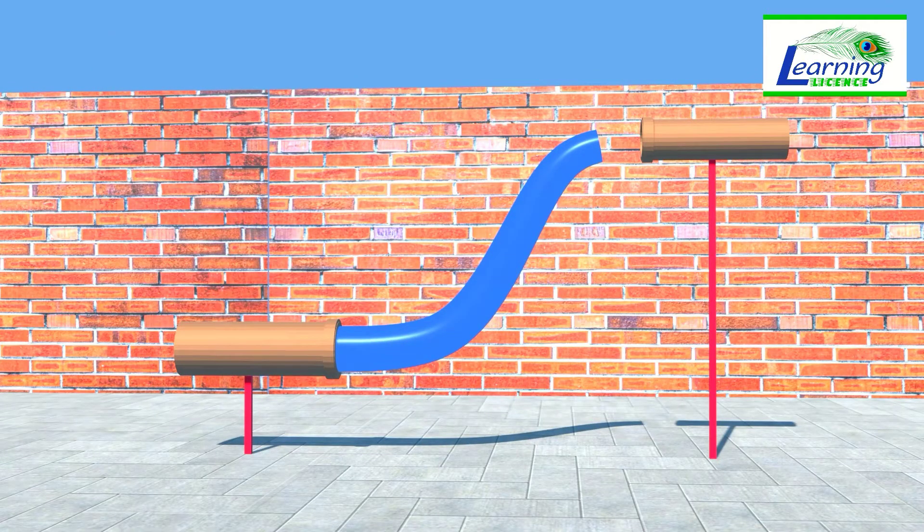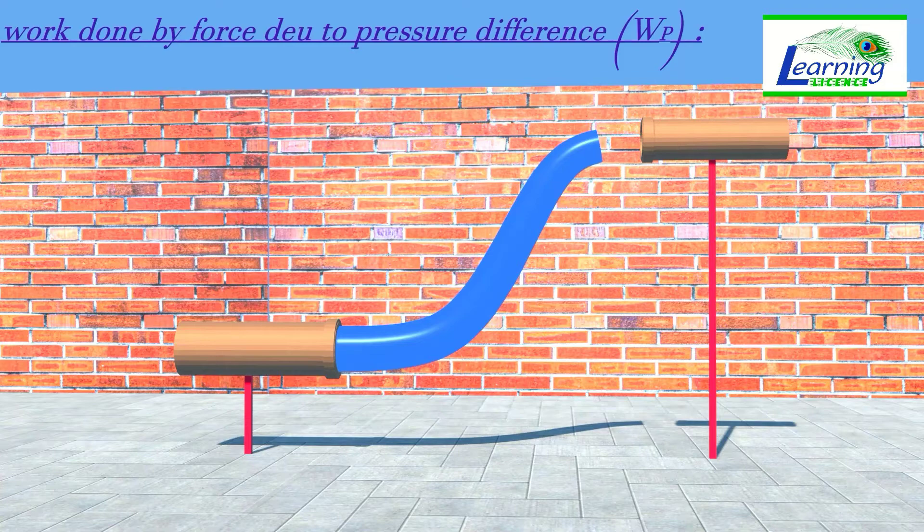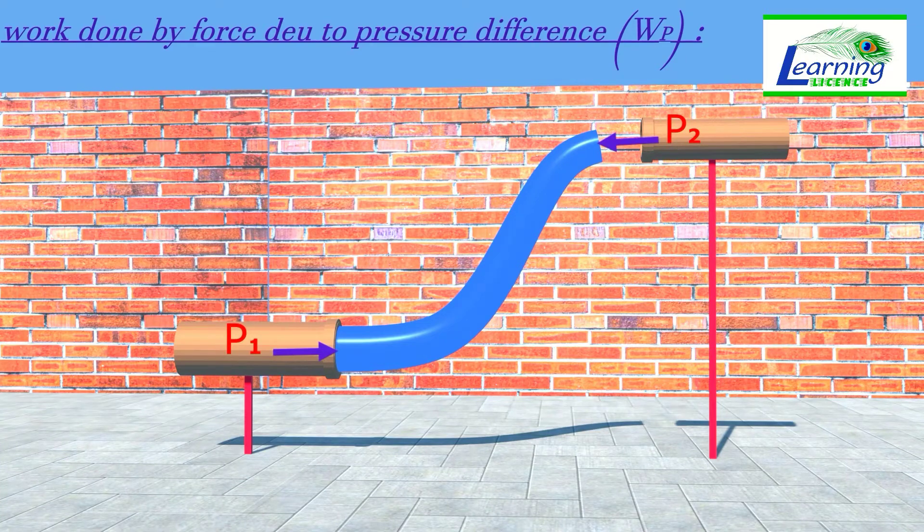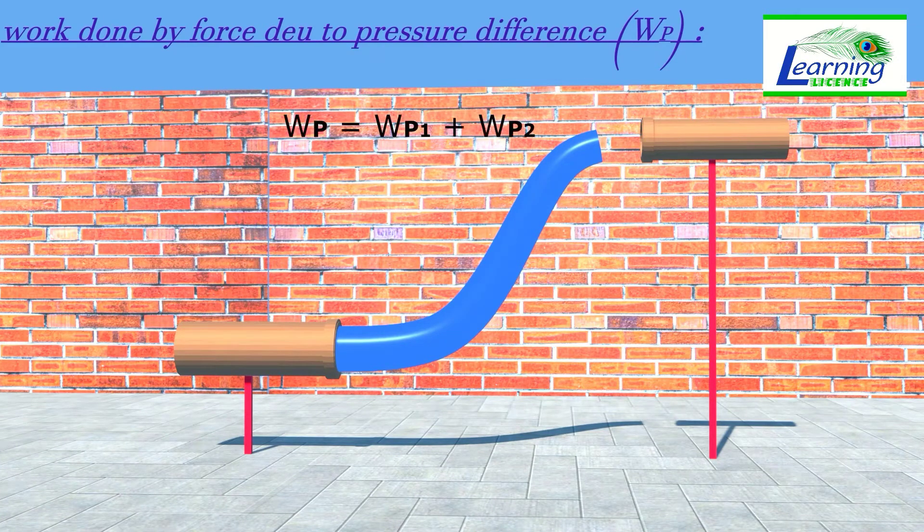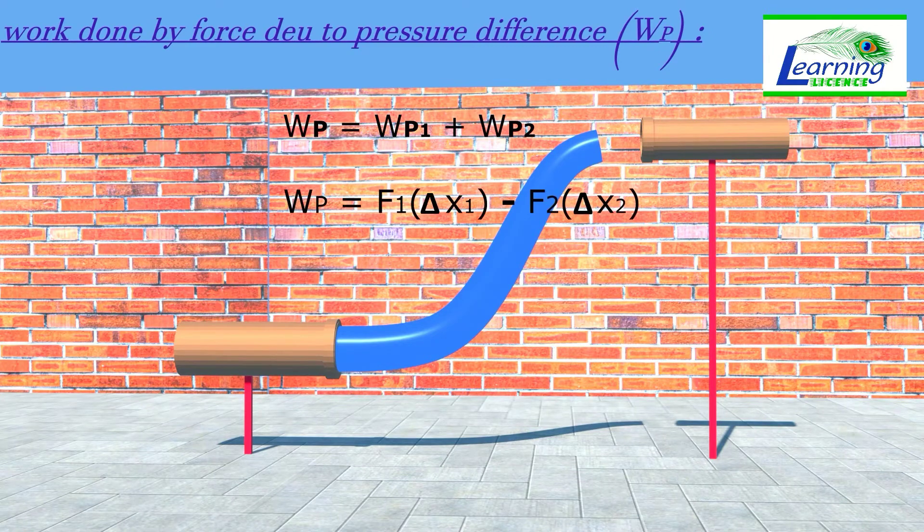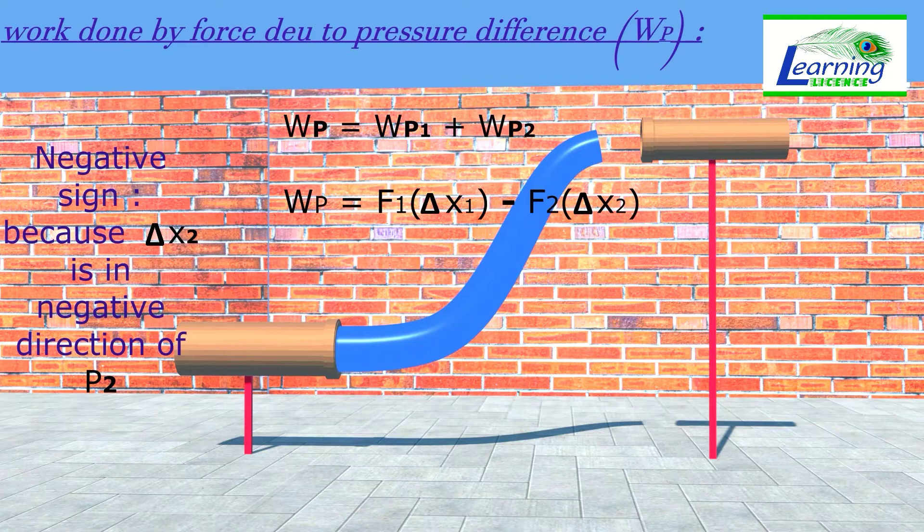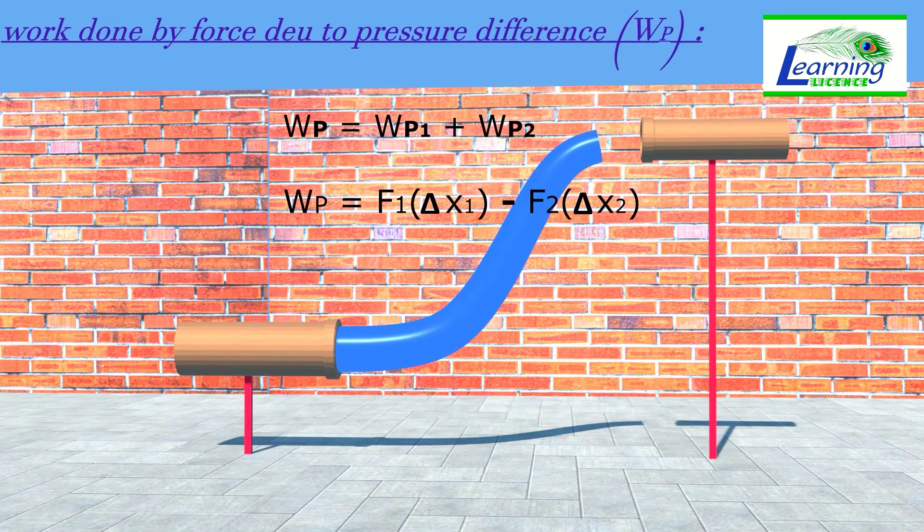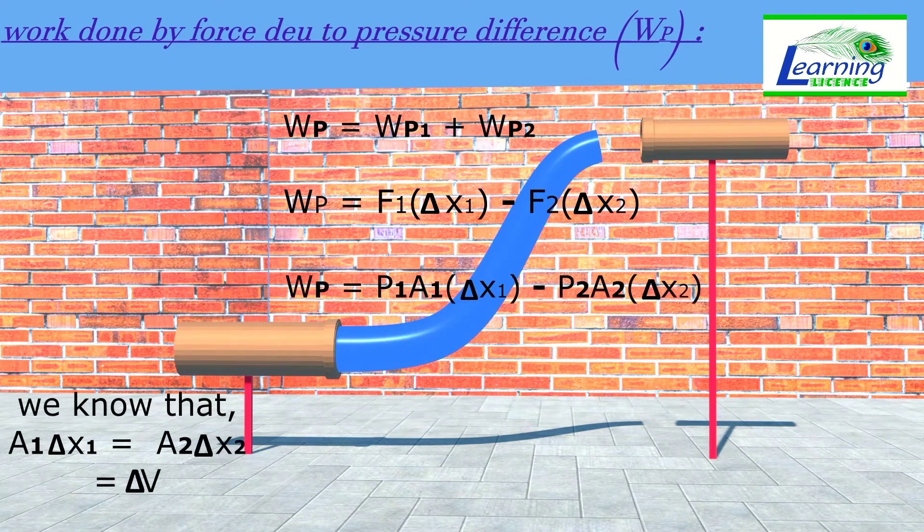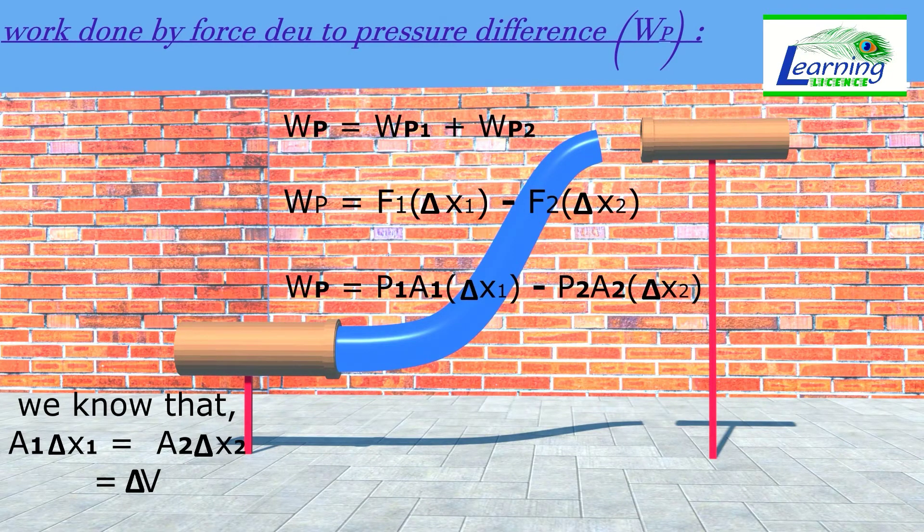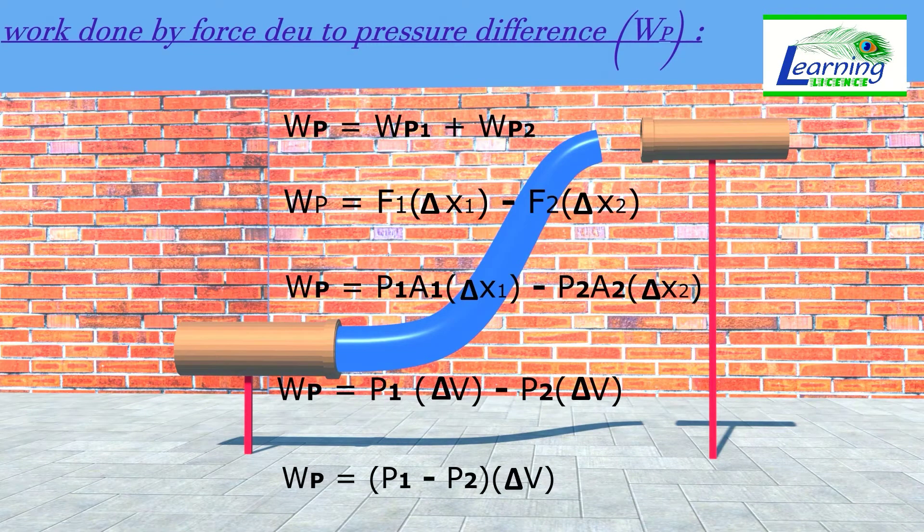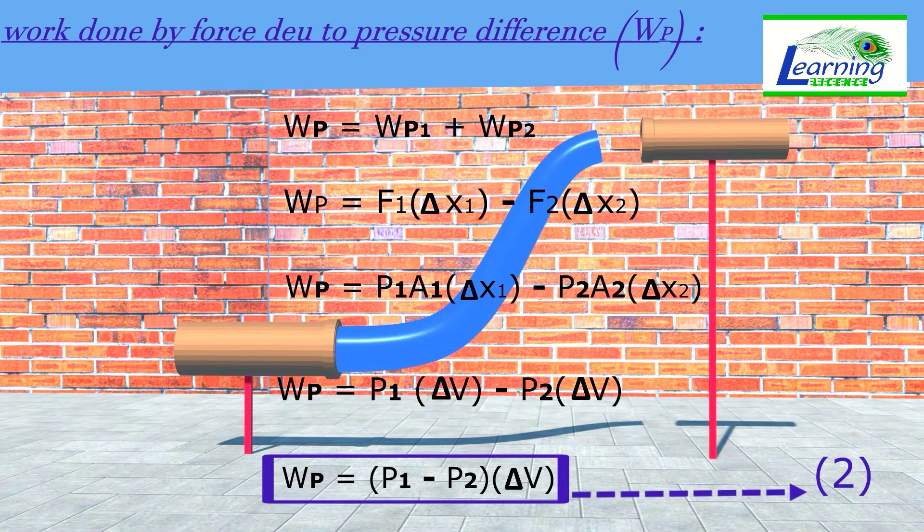First, we calculate work done by pressure difference. As P1 and P2 pressures are present at both ends of fluid section, WP equals WP1 plus WP2. As work is force multiply displacement, here negative sign because del X2 is in the negative direction of P2. As the force is pressure multiply cross sectional area, and we know that A1 del X1 equals A2 del X2, which is volume of displaced section del V. This is final expression for WP, and we call it equation 2.